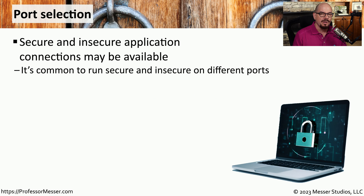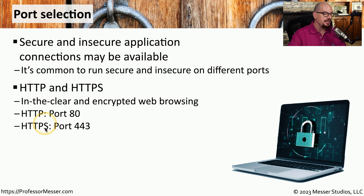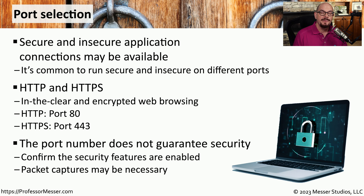Sometimes you can tell if a protocol is secure or not based on the port number it's using. Some protocols use one port number for the insecure version and a different port number for the secure and encrypted version. For example, if you've captured some packets and you see traffic using port 80, that is most likely HTTP being sent in the clear. If you capture traffic using port 443, then it's probably using HTTPS, the secure version, which automatically encrypts all of this traffic. However, just because a particular port number is in use does not guarantee that the traffic is using an encrypted or secure protocol. You'll want to check the server to see if those security settings are enabled.